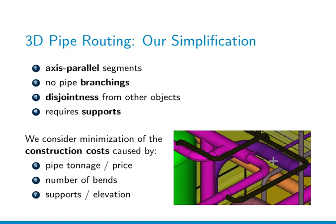The pipe routing problem we consider is a simplification of the practical problem. We consider only axis-parallel segments, which is mostly the case in practice. We don't consider branching of the pipes, which would lead to a Steiner tree problem. We do require disjointness from other objects, and we consider support and elevation costs. The objective function is given by material costs, bends, and construction cost of supports. We don't consider operational costs.